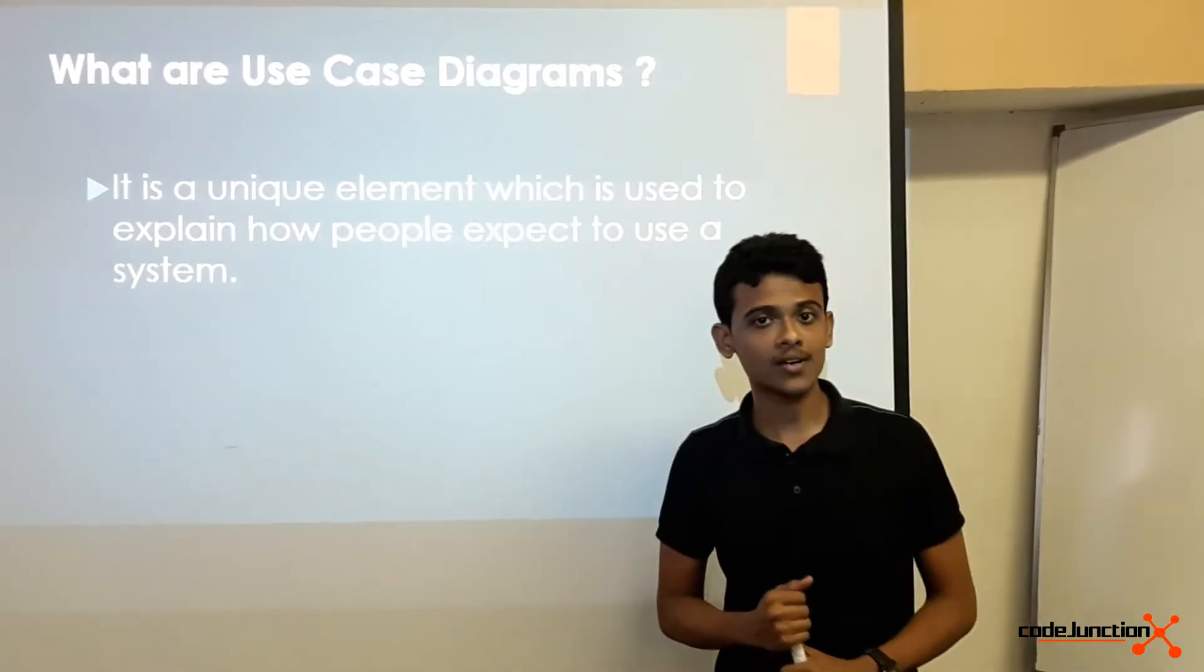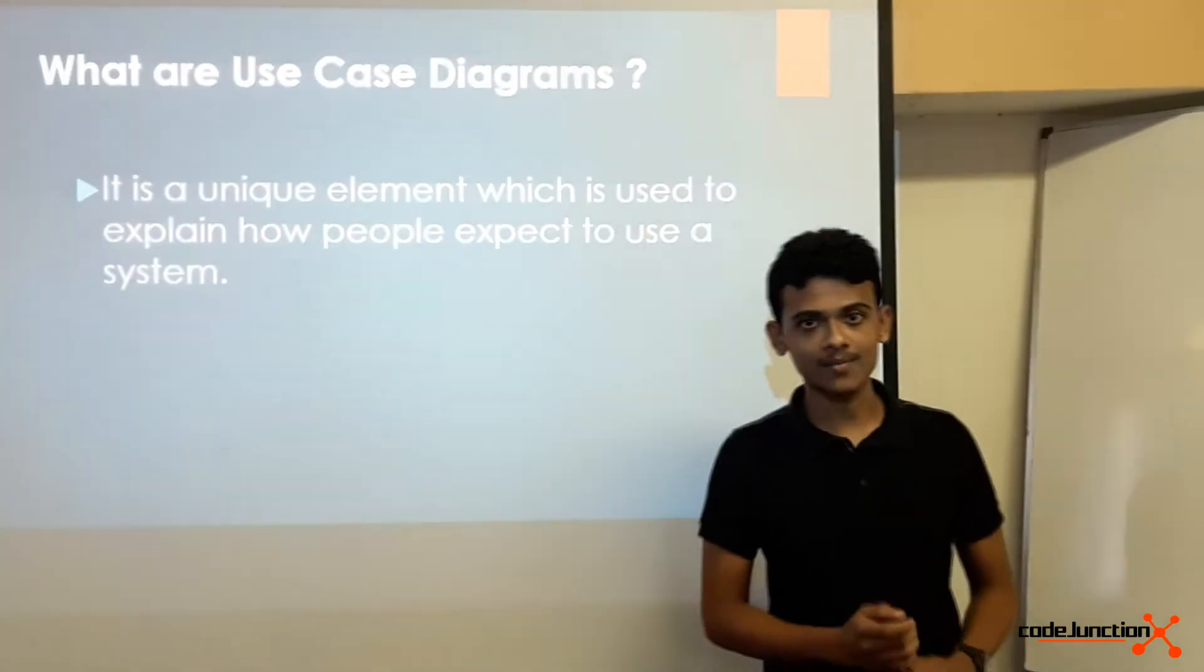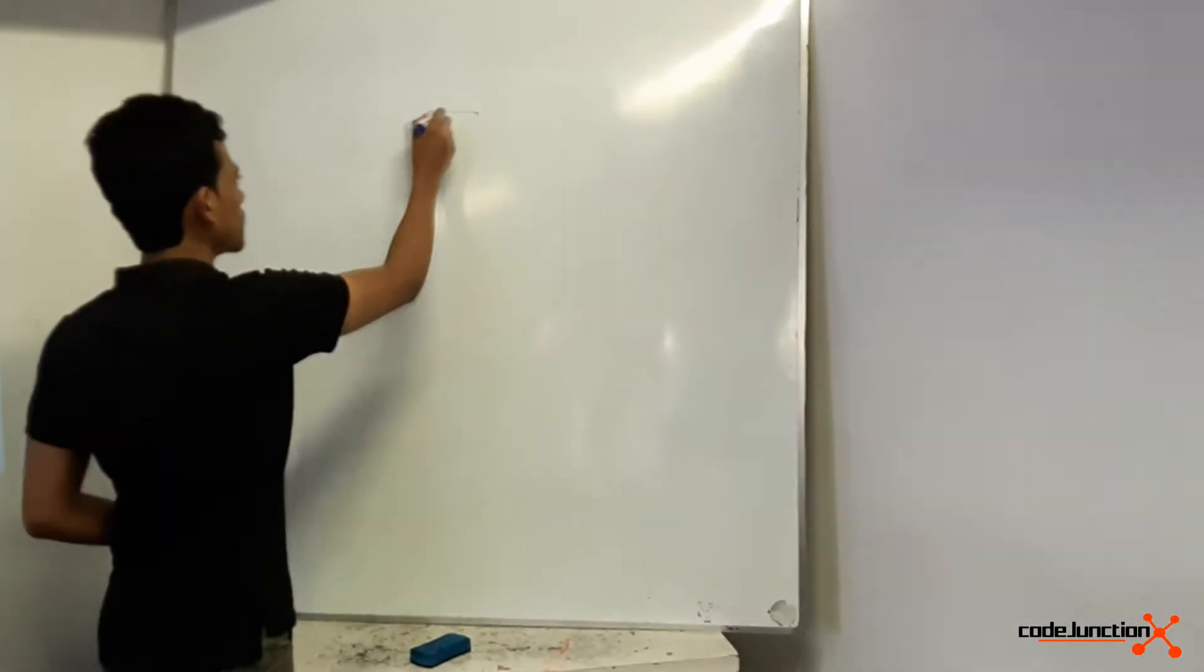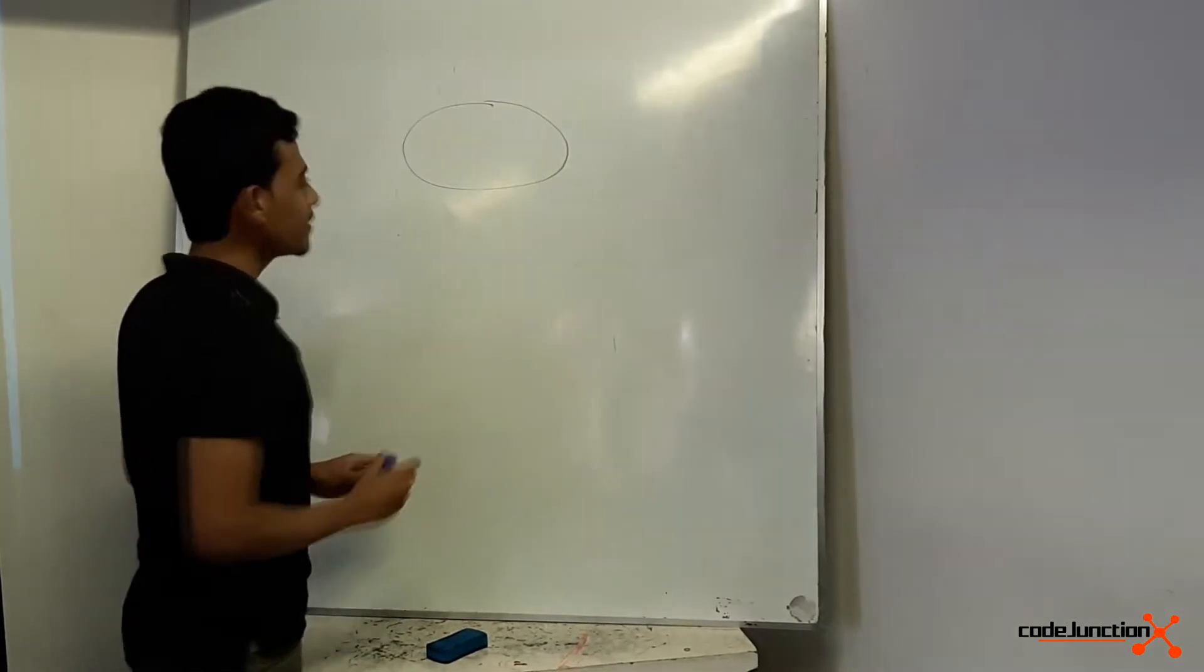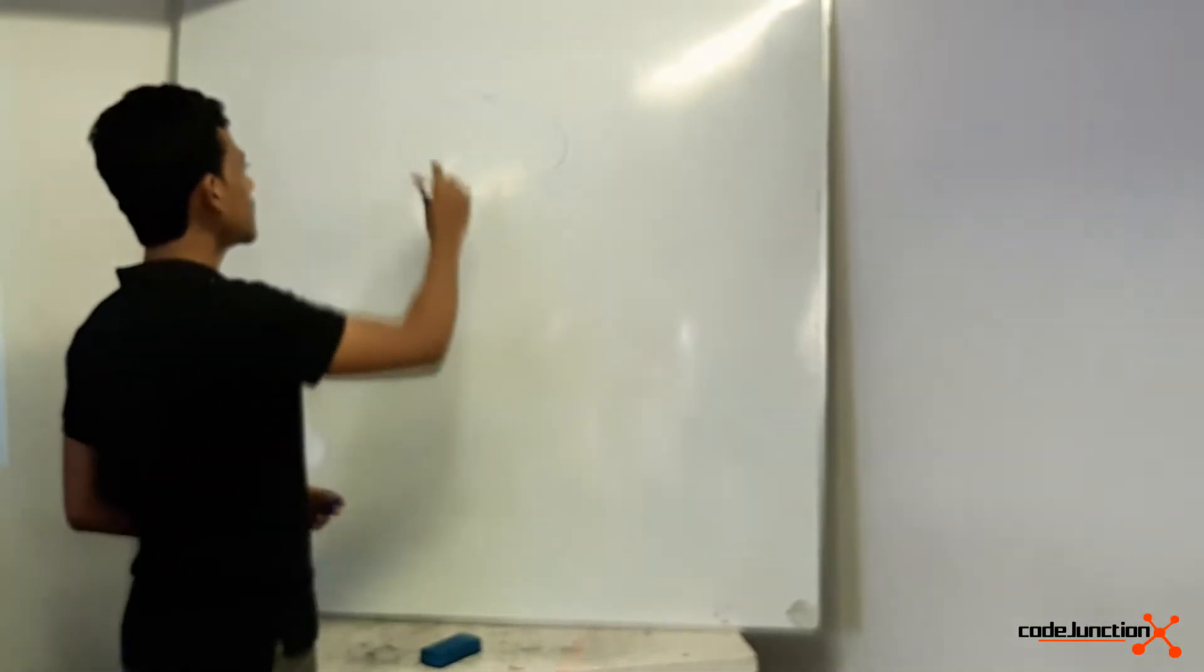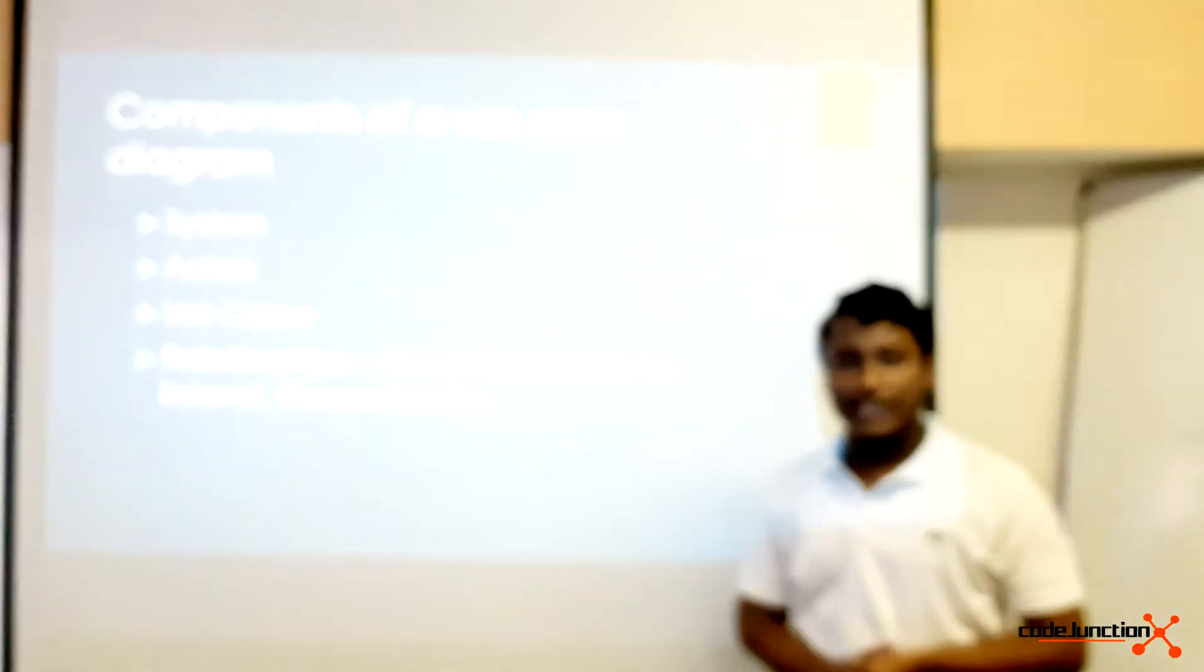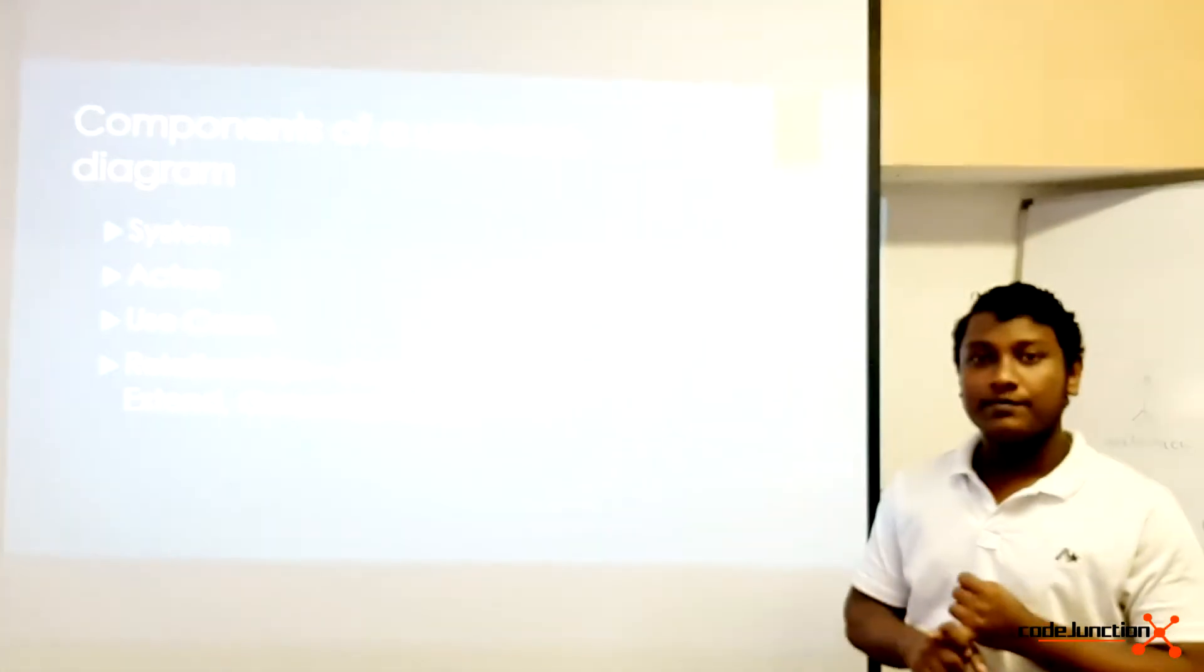Let me take an example of how to draw a use case diagram. We use an oval shape to represent use cases. Likewise, we have to put the functions inside this oval. The components of a use case diagram are system, actors, use cases, and relationships.